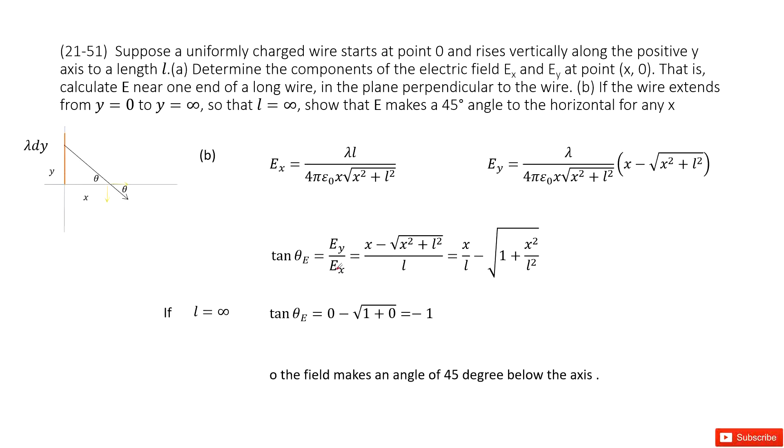And then we can see we input Ey and Ex inside this term. This term, lambda can be cancelled. And this term cancelled. So we get the ratio for Ey and Ex in this term.